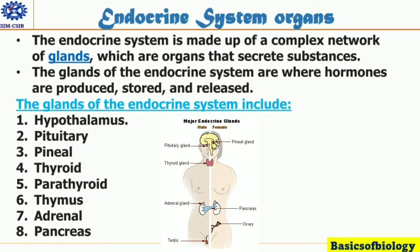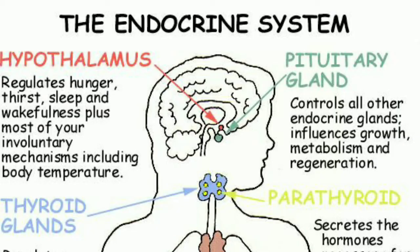The main glands that produce hormones include the hypothalamus. This gland is located in your brain and controls your endocrine system. It uses information from your nervous system to determine when to tell other glands, including the pituitary gland, to produce hormones. The hypothalamus controls many processes in your body including your mood, hunger and thirst, sleep patterns, and sexual functions.